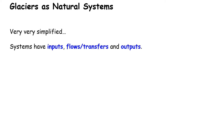Glaciers as natural systems. Now, this is oversimplified for A level — it really is. But a system is something that has inputs, things coming into it, flows and transfers or processes going on within the system, and outputs, things that are coming out of the system.